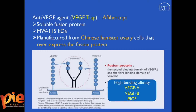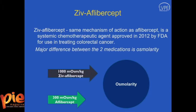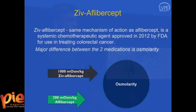Aflibercept is a fusion protein of VEGF R1 and R2 receptors, and it has a strong binding affinity to VEGF-A, VEGF-B, and placental growth factor. Ziv-Aflibercept is approved for colorectal cancer — it was approved in 2012 by the US FDA — but it can be used off-label for ophthalmological diseases. The major difference between Ziv-Aflibercept and Aflibercept is the difference in osmolarity: 1,000 milliosmoles per kilogram in Ziv-Aflibercept and 300 milliosmoles per kilogram in Aflibercept.